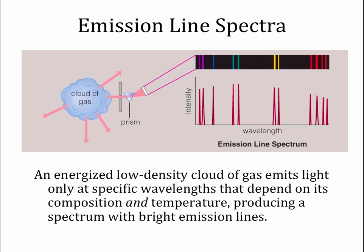The wavelengths that come out depend on both the composition of the gas and the temperature of the gas. So if we see one of these, we can figure out not only what the cloud is made out of, what gases are there, but also what temperature it is. A very common example of emission line spectra that occur in everyday life are neon lights. Neon lights put out a lot of emission lines in the orange and red. The way that a neon light works is that we pump electricity through a tube full of neon gas, and so what we get out are the emission lines from excited neon.